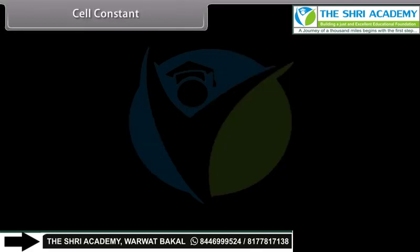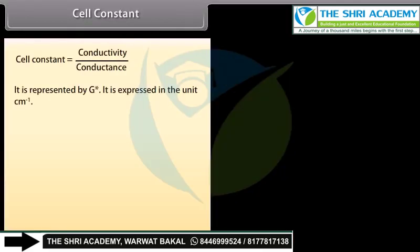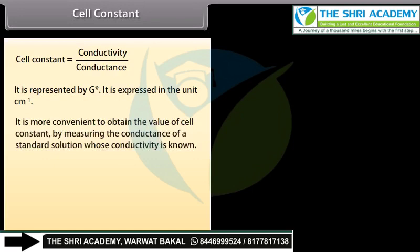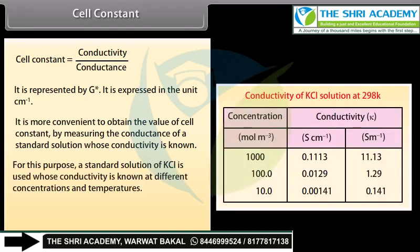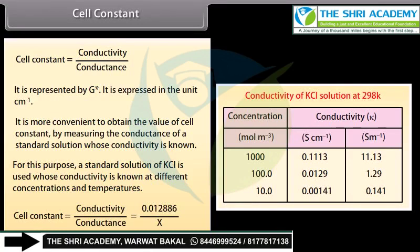Cell Constant: Cell constant = conductivity / conductance, represented by G*. Its unit is cm⁻¹. The cell constant is conveniently obtained by measuring the conductance of a standard solution of known conductivity. A standard solution of KCl is used, whose conductivity is known at different concentrations and temperatures. Cell constant = 0.012886 / x. Once the cell constant is known, conductivity can be calculated from the measured conductance or resistance of the electrolytic solution.